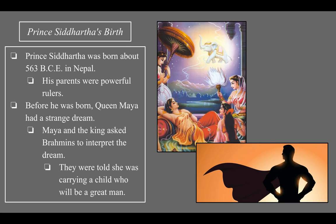Prince Siddhartha's parents were the king and queen of their region — powerful rulers. According to Buddhist traditions, before Siddhartha was born, his mother Queen Maya had a strange dream. In the dream she was carried over the Himalayas to a silver mountain, sat on a silver couch, and then a white elephant with six tusks walked around her and struck her in the right side. Queen Maya and the king went to some Brahmins — priests — to help interpret what the dream meant.